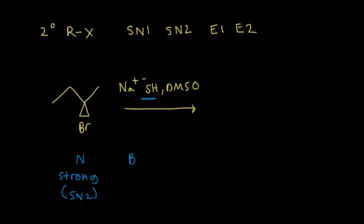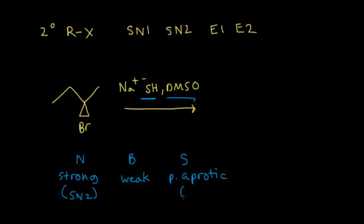Is the hydrogen sulfide anion a strong or weak base? It is a weak base because it has a relatively strong conjugate acid. The solvent here is DMSO, which is a polar aprotic solvent. Polar aprotic solvents favor an SN2 mechanism because they increase the nucleophilic strength of your nucleophile.